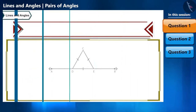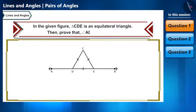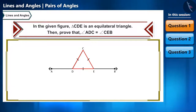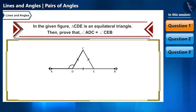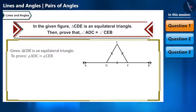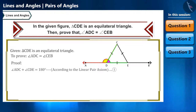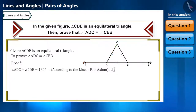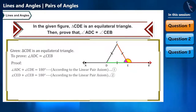In the given figure, triangle CDE is an equilateral triangle. Prove that angle ADC is equal to angle CEB. By using the linear pair axiom, we can say that angle ADC plus angle CDE equals 180 degrees, and similarly angle CED plus angle CEB equals 180 degrees.